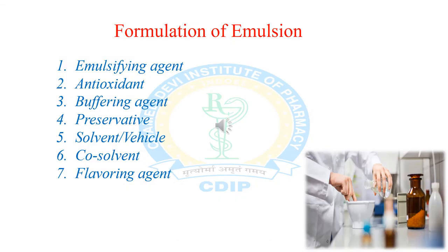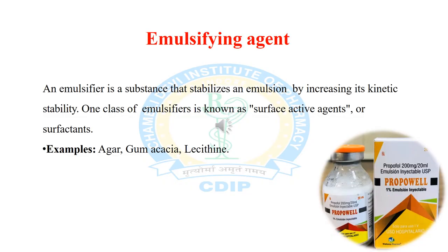The formulation considerations of emulsion: emulsion contains emulsifying agent, antioxidant, buffering agent, preservative, solvent, co-solvent, flavoring agent, and vehicle. Let's discuss one by one. As we discussed in the earlier PPT, emulsion is a biphasic liquid preparation.